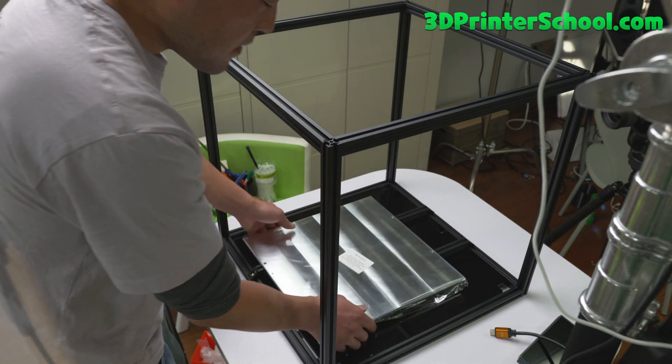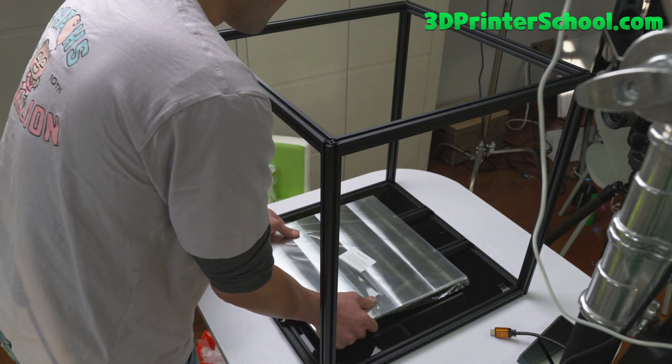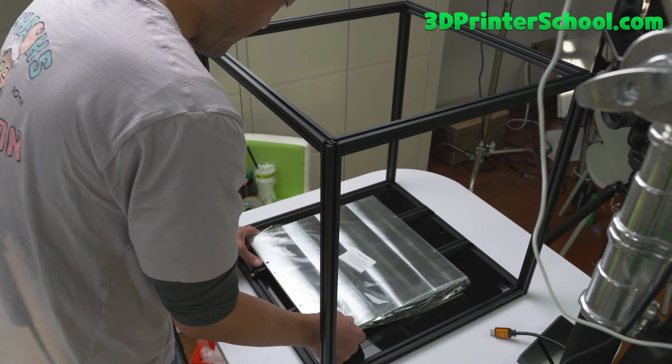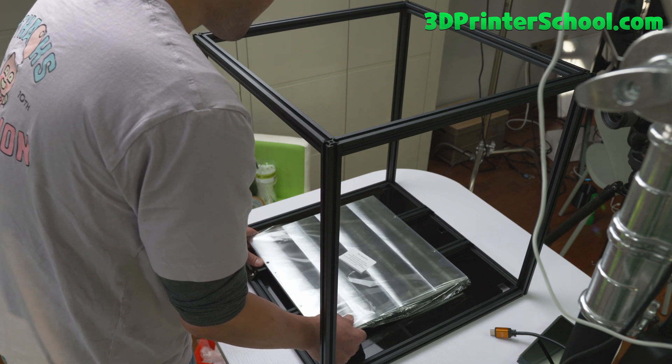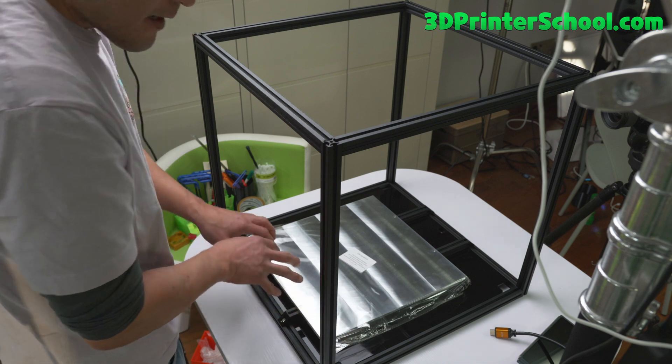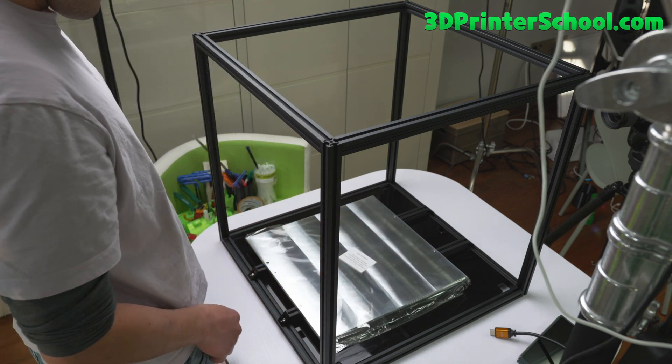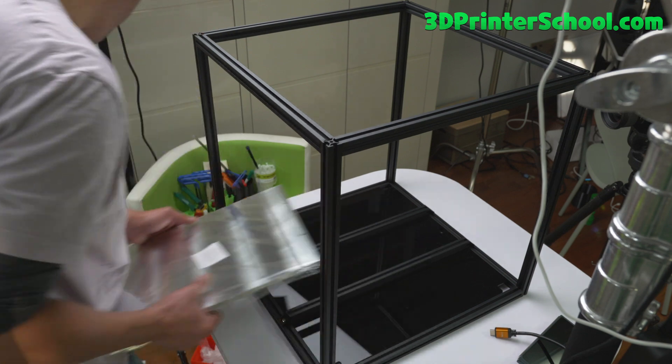Also, one more thing. Grab your heat bed and make sure the holes align. Mine aligns perfectly. If they don't align, they're a little bit off, this should be okay. But if they're off by a lot, later on your bed's not going to fit. So make sure it's aligned and mine aligns pretty good. I'm going to set that aside for another day.